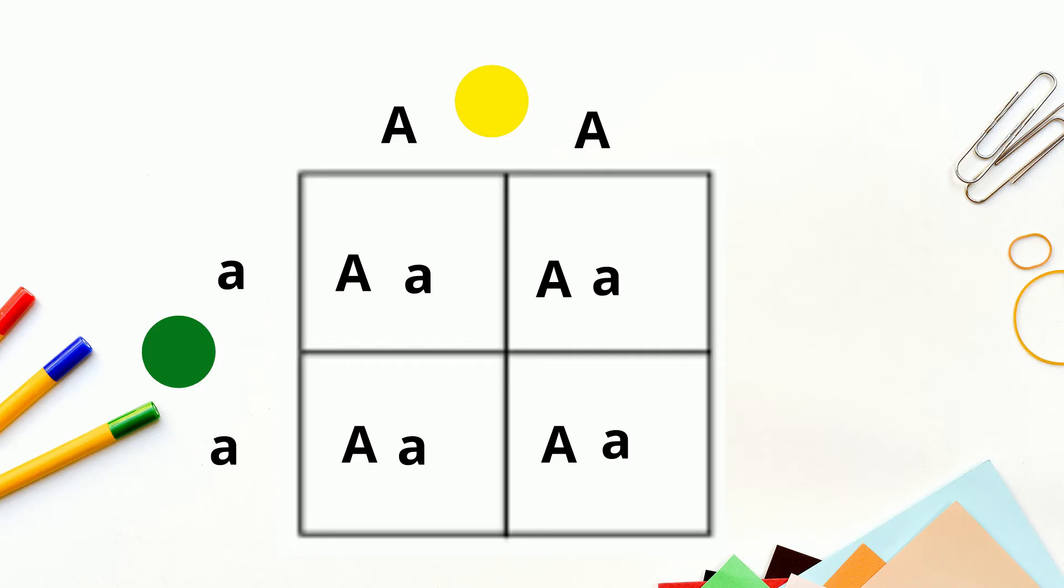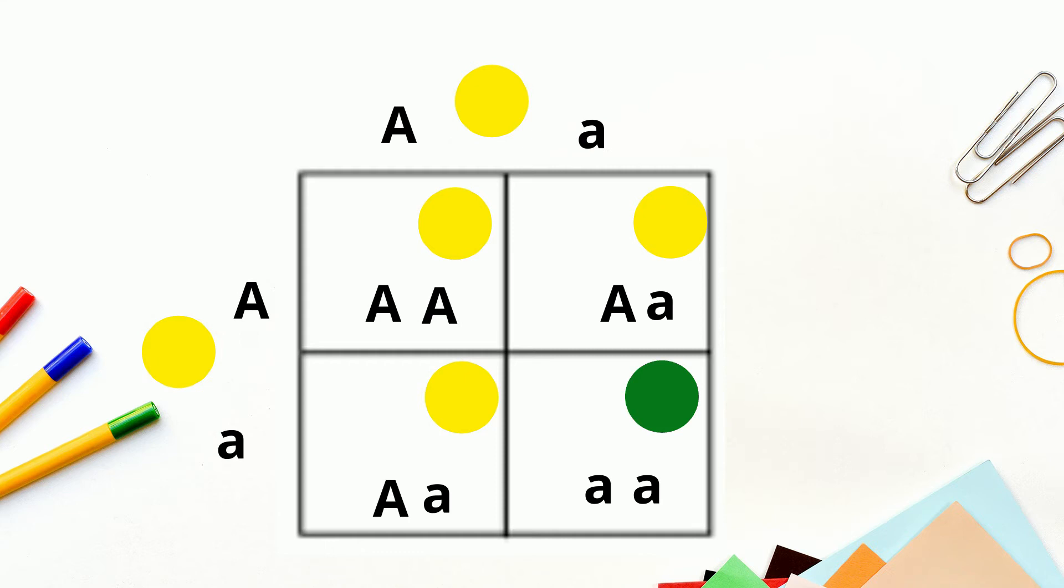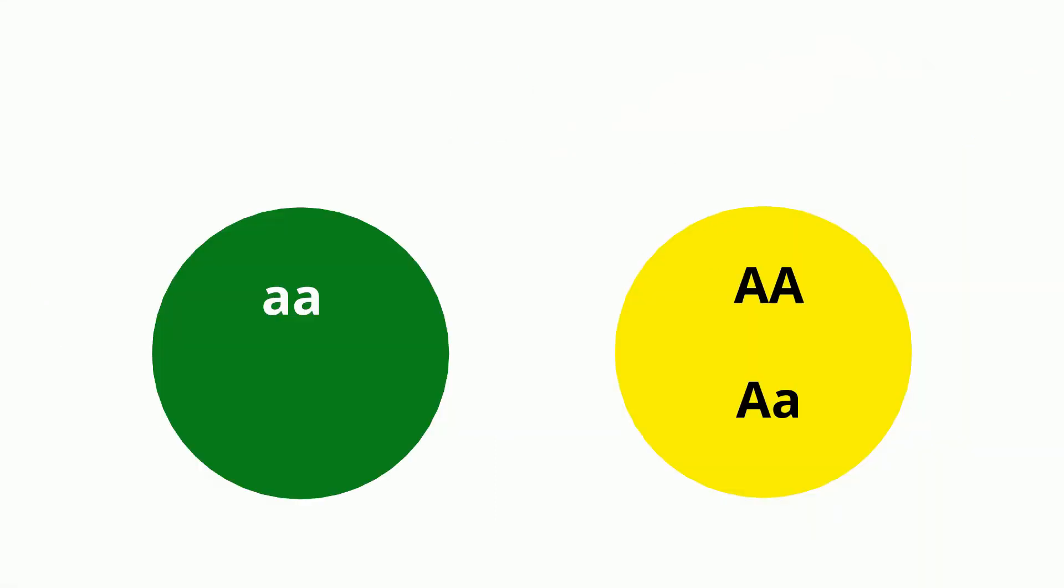The F1 generation looked like this, and then the F2 generation were big A big A, big A little a, or little a little a. This interaction between these genotypes determines the physical trait that is visible to us, which we call the phenotype.